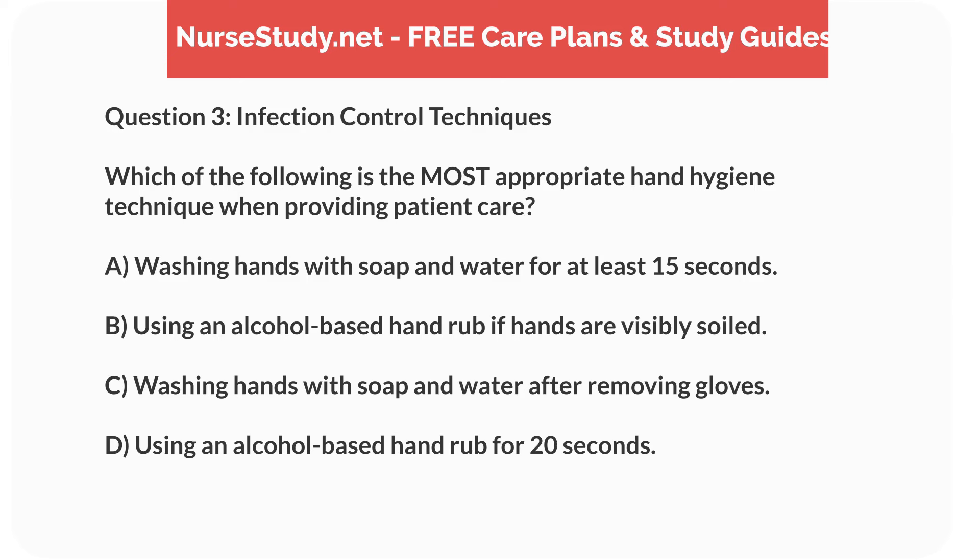Question 3. Infection Control Techniques. Which of the following is the most appropriate hand hygiene technique when providing patient care? A. Washing hands with soap and water for at least 15 seconds. B. Using an alcohol-based hand rub if hands are visibly soiled. C. Washing hands with soap and water after removing gloves. D. Using an alcohol-based hand rub for 20 seconds.